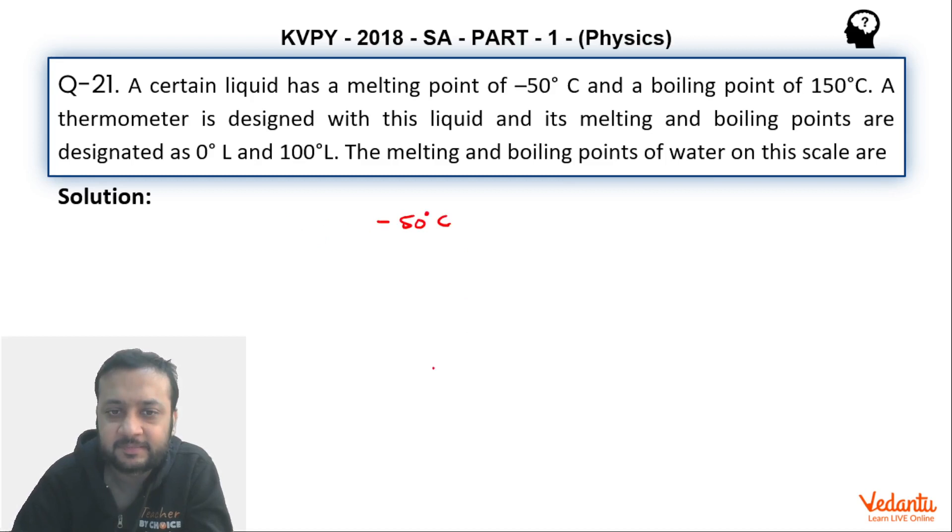That means Celsius minus 50 temperature this time, so you have to be 0 degree L. Similarly, when the temperature on the Celsius scale is 150 degrees Celsius, here 100 degree L temperature. So basically you can see the Celsius scale temperature 200 degree rise karta hai to L pe temperature 100 degree rise karta hai.